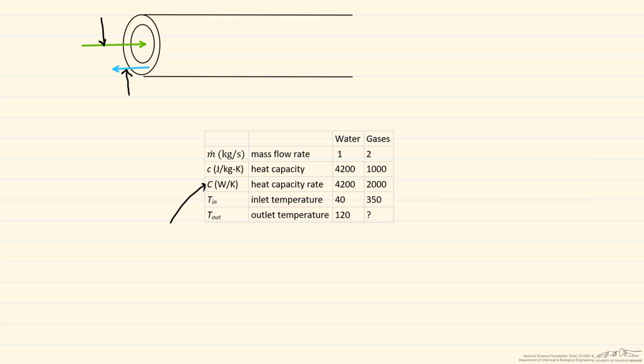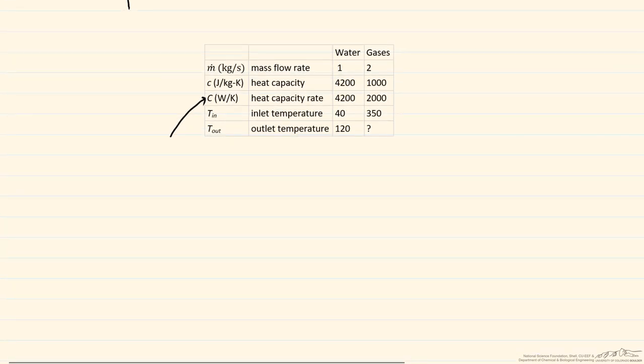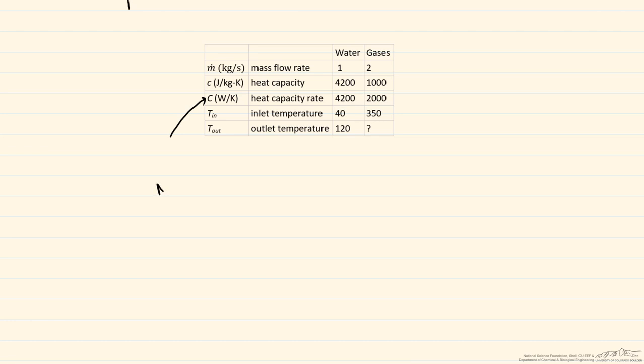So we're going to approach this using the NTU effectiveness method. By definition, NTU is defined as U times A divided by C_min, where U is the overall heat transfer coefficient, A is that area, and C_min is the minimum heat capacity rate.